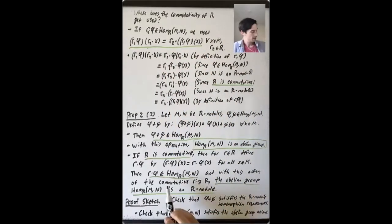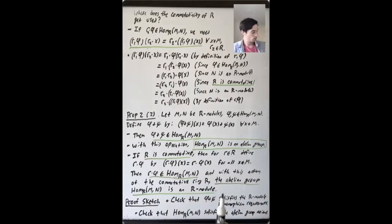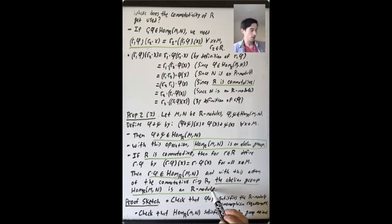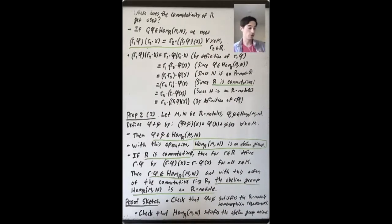Once you know this is an R-module homomorphism, you can check that this really does turn the abelian group into an R-module. You have to check all the axioms for what it means to be an R-module. They are all pretty straightforward, but there really are some details to check, and I'll leave that to you.